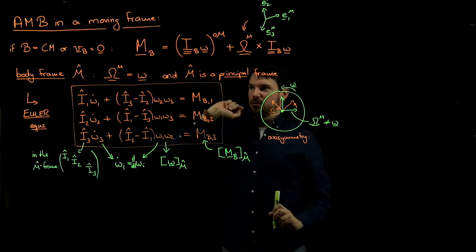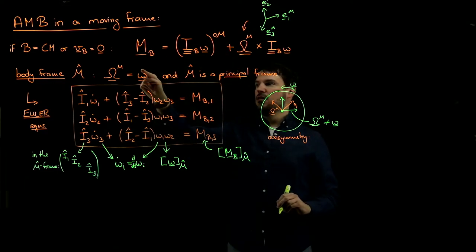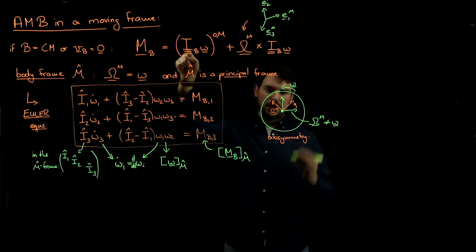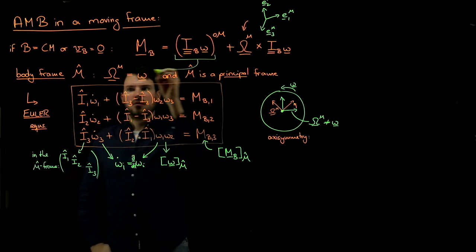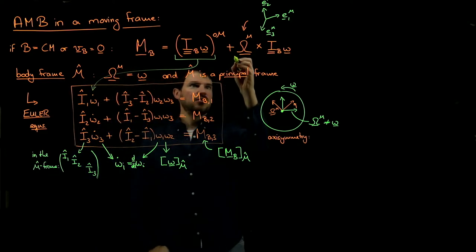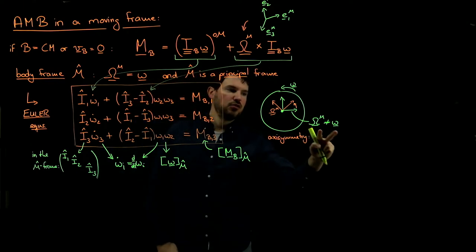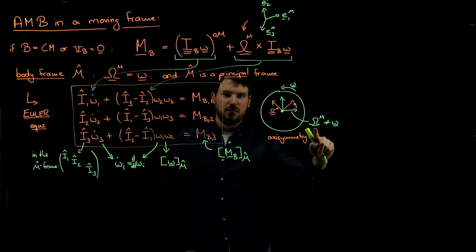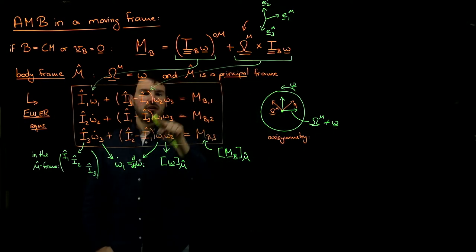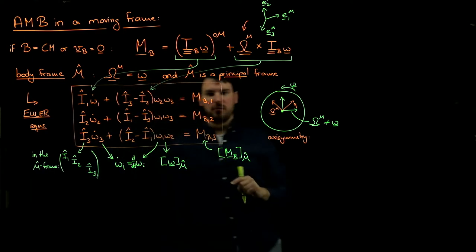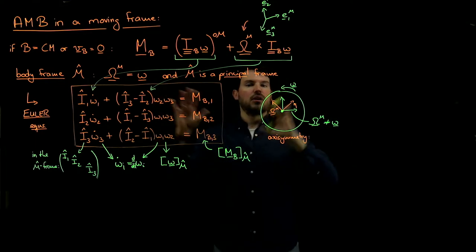The only difference between the general equation and the Euler equations is that in the Euler equations we set capital omega equal to little omega. For an axisymmetric system with a frame where omega_M is not equal to the body's omega, we need to replace this — meaning we'll have one little omega and one capital omega instead of two little omegas. If you need that, just look at the formula collection or lecture notes where both cases are explained clearly.